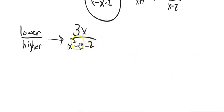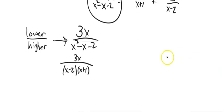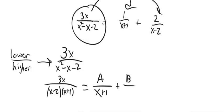First thing I want to do is factor this denominator. This is the same as 3x over x minus 2 times x plus 1 — things that multiply to negative 2 and add to negative 1. If the denominator ends up not factorable, we have some methods we'll talk about later. Now what we want to do is rewrite this. Notice the pieces: x plus 1 and x minus 2 are the factors of that denominator. I'm going to write this as a over one of the factors plus b over the other factor.